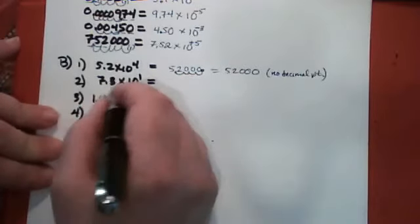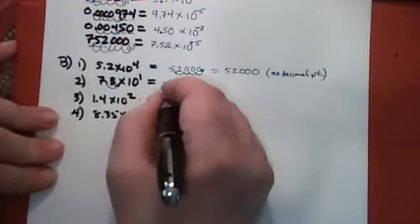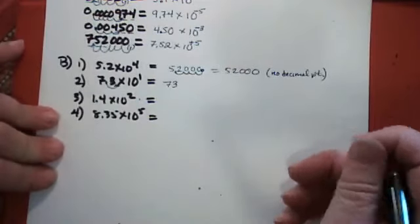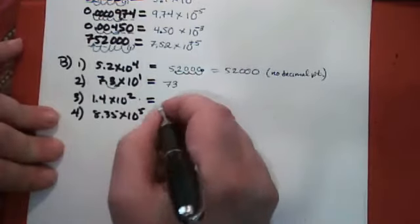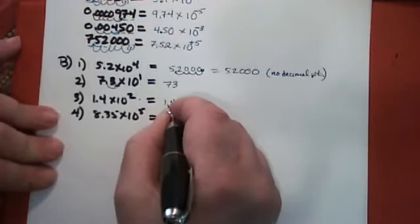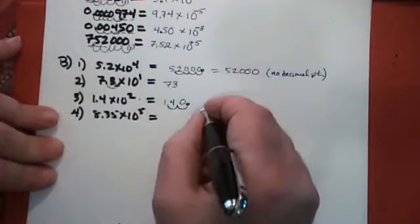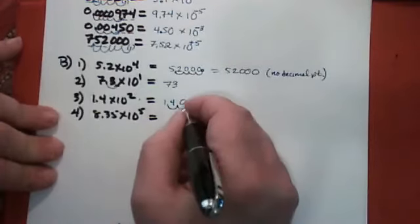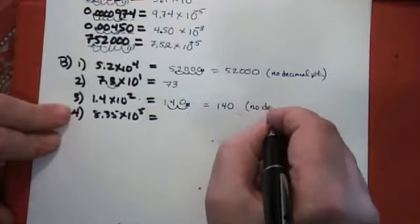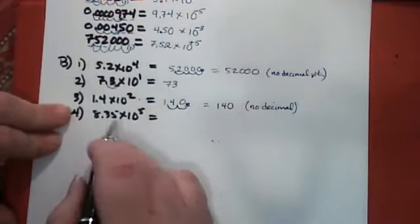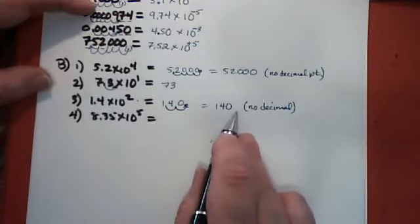7.3×10¹ means you move the decimal point one place to the right, in the direction that makes the number bigger. So 7.3×10¹ is just 73. For number three, 1.4×10², you move the decimal point twice in the direction that makes the number bigger. That leaves an empty space, so you fill it in with a zero, but you don't actually write the decimal point into the answer. The original number had two significant figures, so the answer should also. It's 140 without a decimal point.